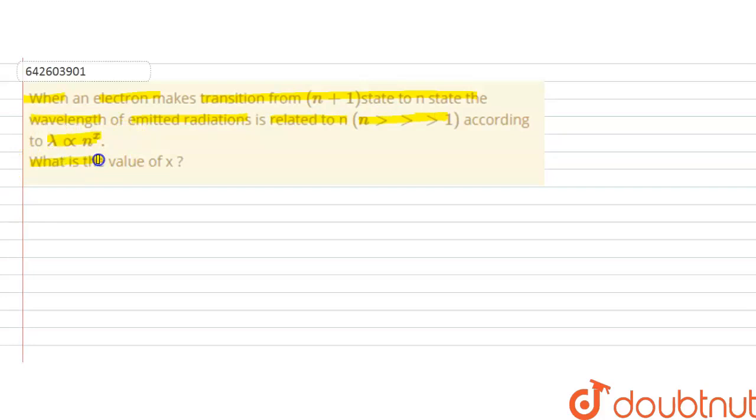So, what is the value of x? In this question, it is given that an electron when it makes transition from n plus 1 state to n state, it will emit radiation of wavelength lambda and lambda is related to n to the power x. We have to find out the value of x.